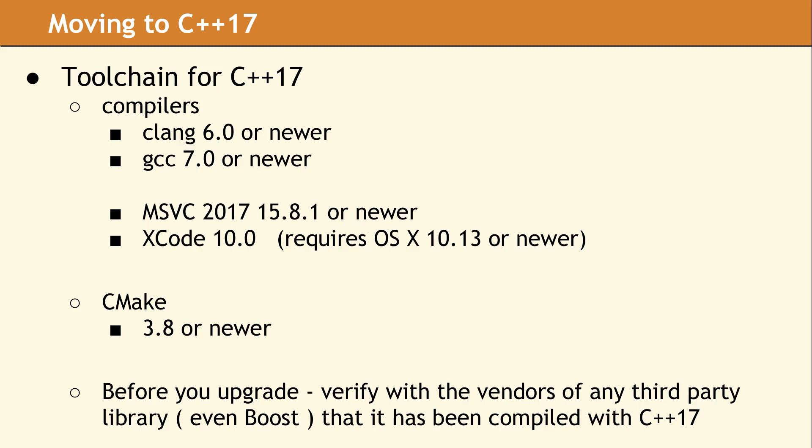If your build system uses CMake, you will need to move to at least version 3.8. Older versions of CMake do not have the full feature set for C++17 support.